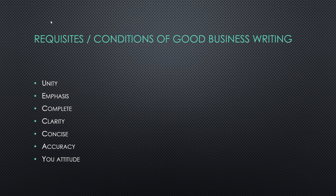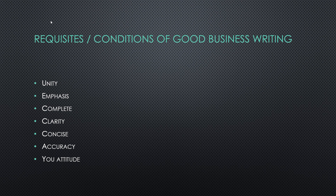Next we can study the requisites of good business writing. First one is unity — the written message should contain unified sentences and unified paragraphs, and each paragraph should stress only one central idea. Second is emphasis — the ideas relating to the message should be highlighted in order of their importance. Thoughts of higher value should be placed in the most prominent position. Graphs, charts, and audio-visuals should be used at proper places to attract the reader. Third is completeness — the written message should be complete in all respects, as an incomplete message breeds misunderstanding and misinterpretations.